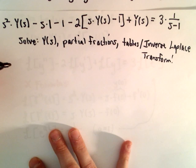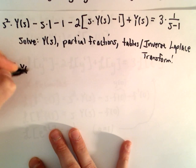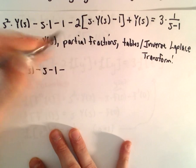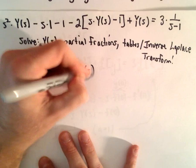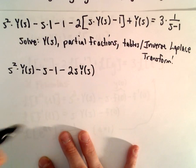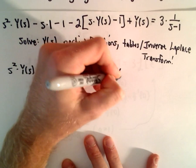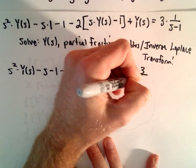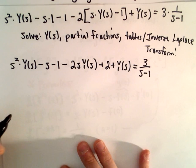So let me just write it all out. We have s squared times Y of s minus s minus 1. If we distribute, we would have minus 2s times Y of s — and negative 2 times negative 1 gives us positive 2 — plus Y of s. On the right side I'm going to write this as 3 over s minus 1.